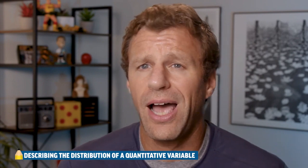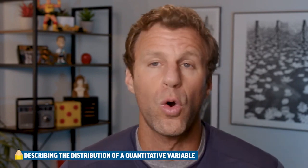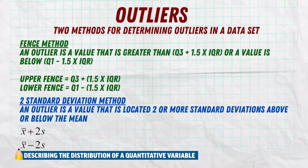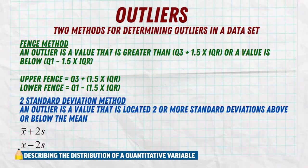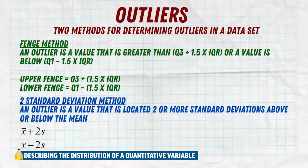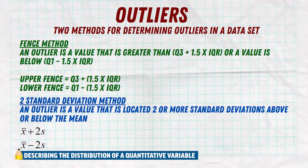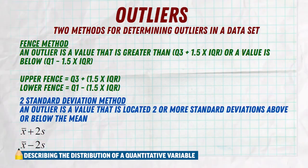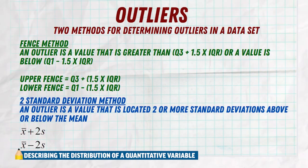Now we have outliers. When you're looking at a graph, you might vaguely say that looks like it could be an outlier. But now we have specific ways to determine if you have outliers. If you have your quartiles, you can use the fence method — find the upper fence and lower fence. The upper fence is Q3 + 1.5 × IQR. Any value in your data above that number is an outlier. The lower fence is Q1 − 1.5 × IQR. Any value below that number is also an outlier.